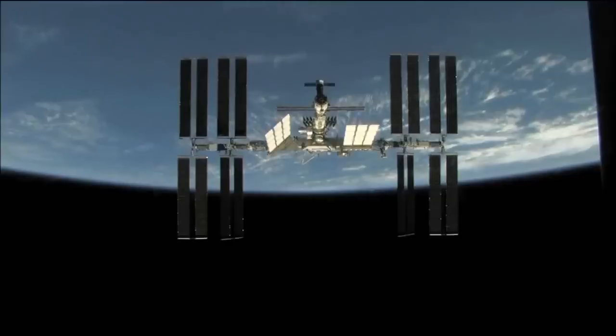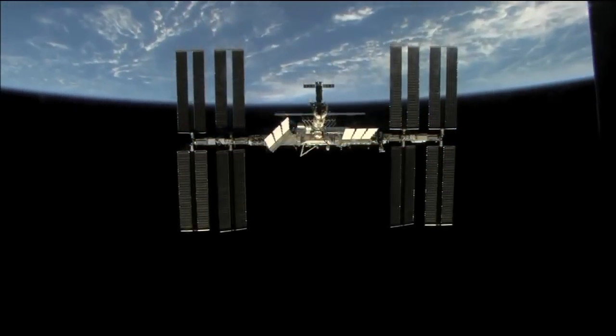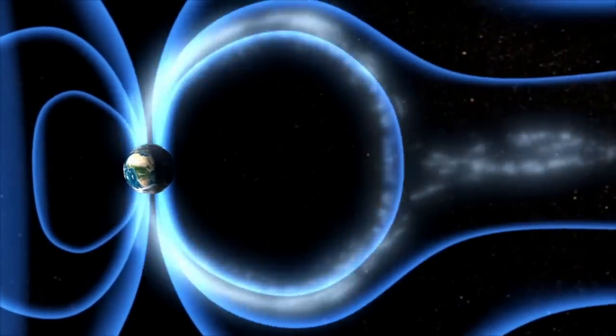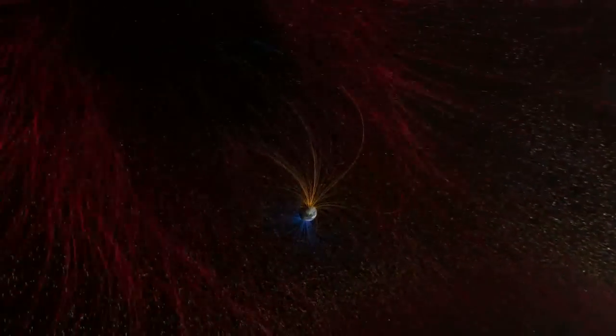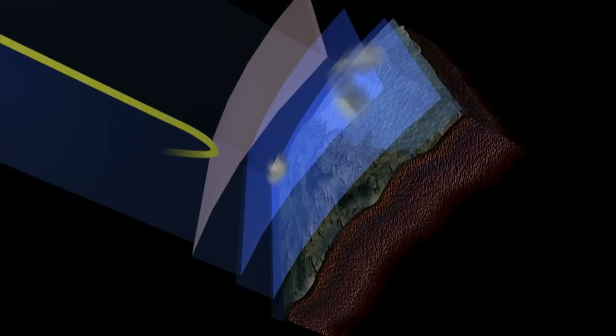Space weather can have several different effects on the Earth and the near-Earth environment. In space, it can create dangerous radiation in the form of particles, which is detrimental to the health of astronauts. These particles, as well as solar flares, can cause damage to satellites in near-Earth orbit. In addition, electromagnetic disturbances created by geomagnetic storms can affect power transmission on the ground and can also disrupt communication. However, space weather has no direct effect on human beings themselves.